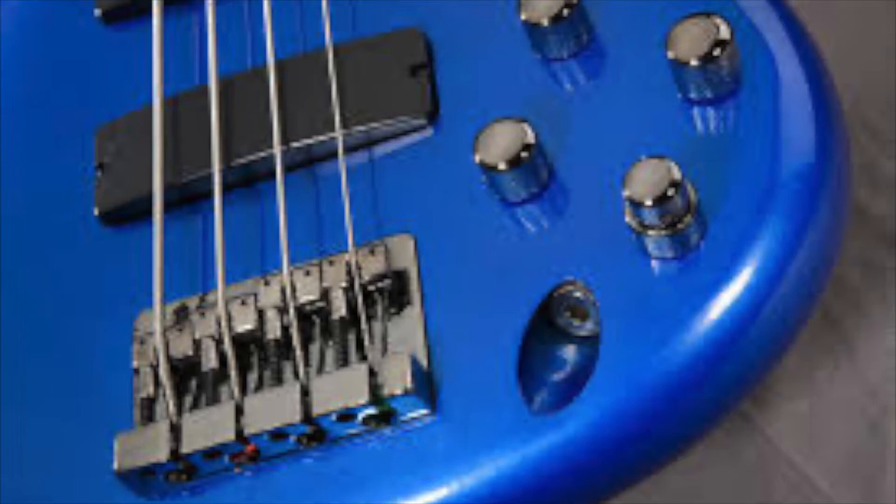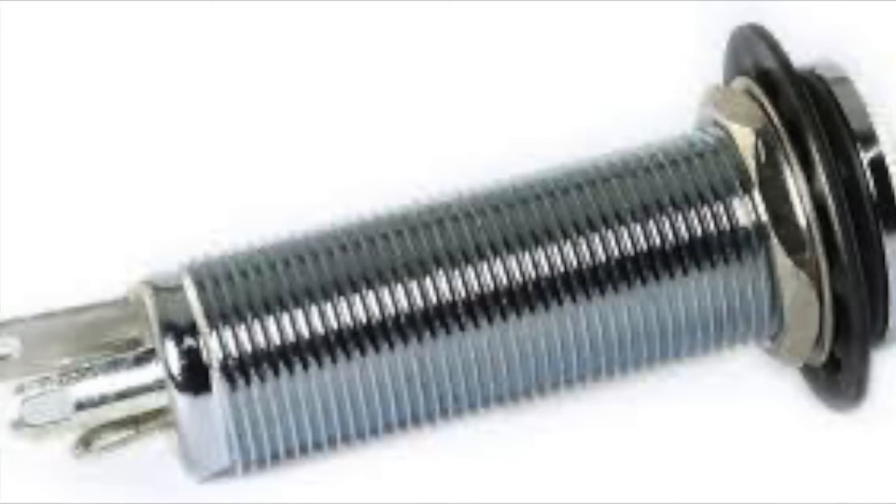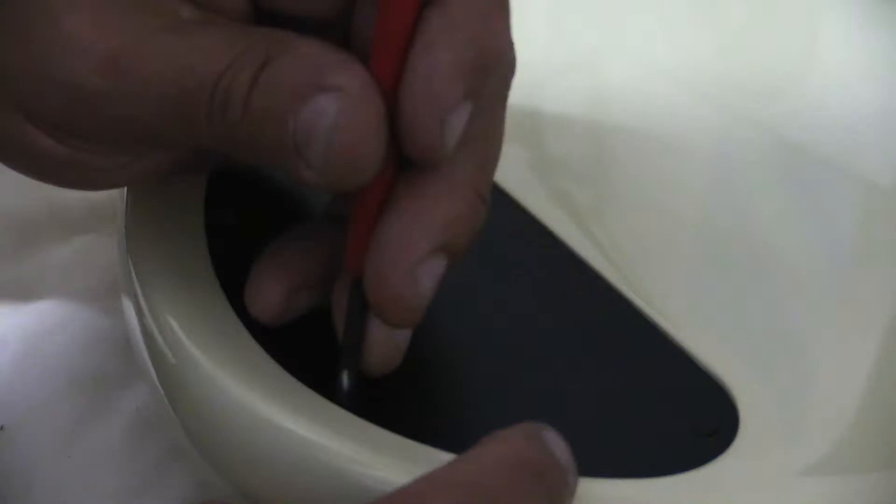If you have an instrument with a barrel type jack, they're very convenient for running the cable through your strap and into the bass. But they're not quite as robust as normal jacks because all that mechanism has to be installed in a smaller space. So when they get noisy, remove your control cover.